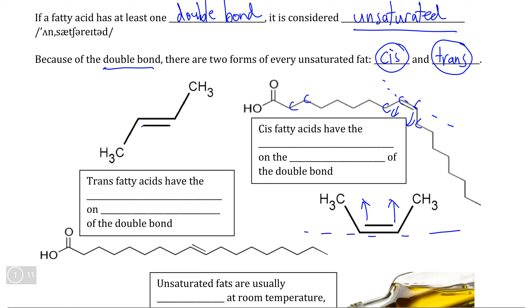We can say that cis fatty acids have the longest carbon chain on either side of the double bond. So this carbon chain here and this carbon chain here are on the same side of the double bond. And again, we can see this by simply looking at the direction of where the carbons coming off of the carbons on the double bond are.